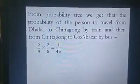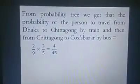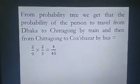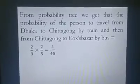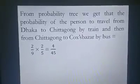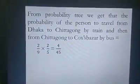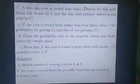What is the probability that the person goes from Dhaka to Chittagong by train and then from Chittagong to Cox's Bazar by bus? From the probability tree, the probability of going Dhaka to Chittagong by train is two-ninths, and from Chittagong to Cox's Bazar by bus is two-fifths. Multiplying these independent probabilities gives four over forty-five. That is the answer to problem 16.